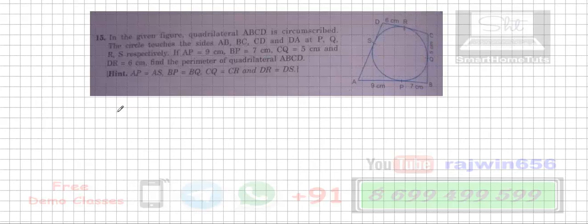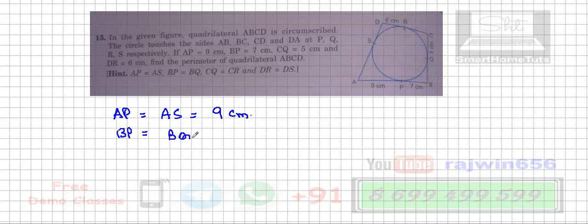AP is equal to AS, so this is going to become 9 centimeters. You will write down that statement, or all four things first, and then write the statement: tangents from an external point are equal in length. The next part is BP is equal to BQ, so this is going to be 7 centimeters. So this part is 7, this part is 9.